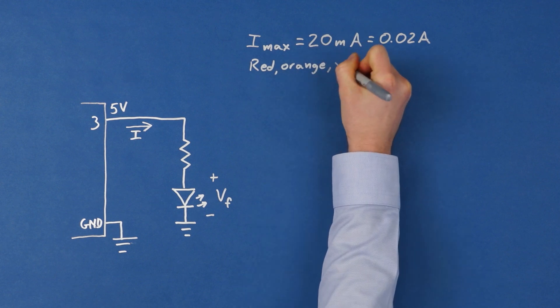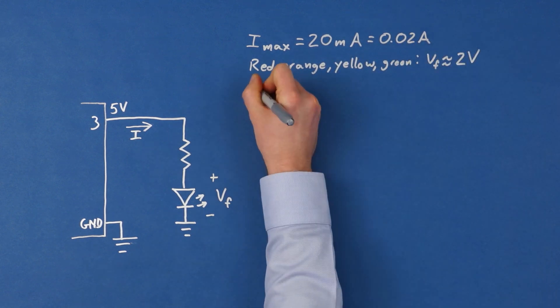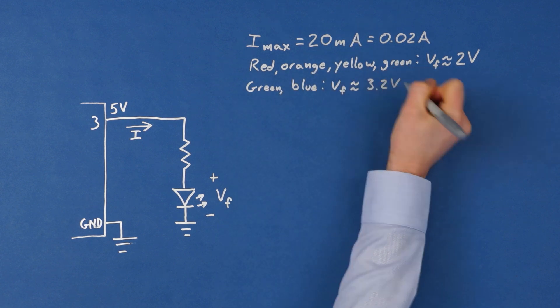Red, orange, yellow, and some green LEDs will have a forward voltage of about 2 volts. Some green and most blue LEDs will have a forward voltage of about 3.2 volts.